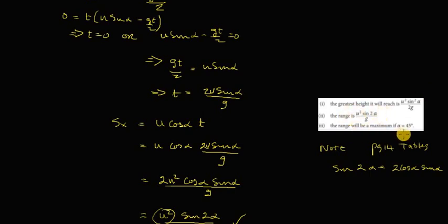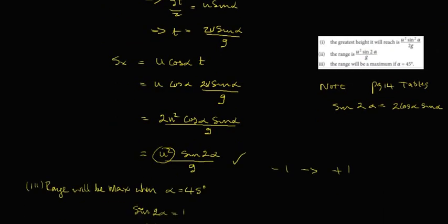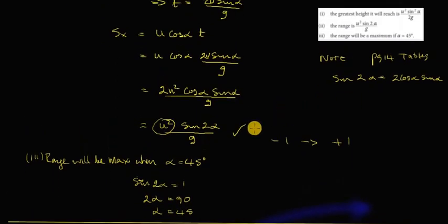And the range will be a maximum when alpha is equal to 45 degrees. All right. Now this, this is our range. It'll be maximized. If you look at this, obviously gravity is not going to change. It can't change at all. To maximize this distance, you have to change the numerator, make it as positive as possible.